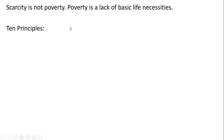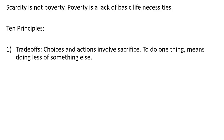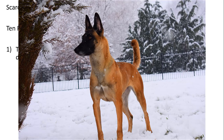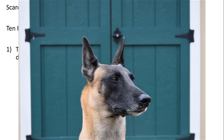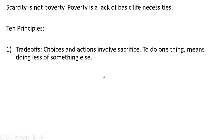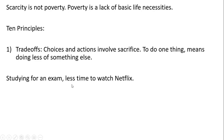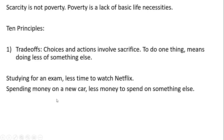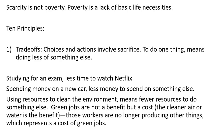Let's go through Mankiw's ten principles — ten key ideas that will be recurring themes throughout this course and textbook. The first key idea is trade-offs. Choices and actions involve sacrifice. To do one thing means doing less of something else. Studying for an exam means less time to watch Netflix. Spending money on a new car means less money for something else. Using resources to clean the environment means fewer resources to do something else. Green jobs are not a benefit of cleaning the environment but a cost — the cleaner air or water is the benefit. That represents a lost opportunity; that's the trade-off.